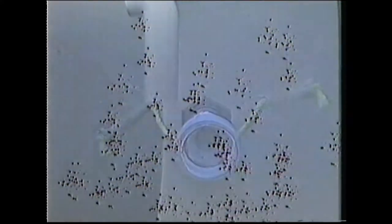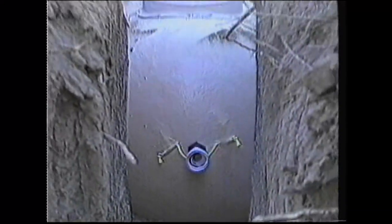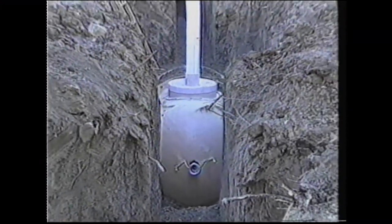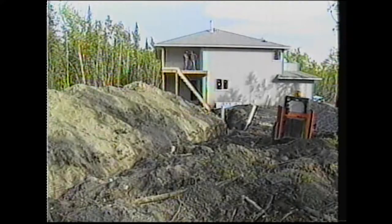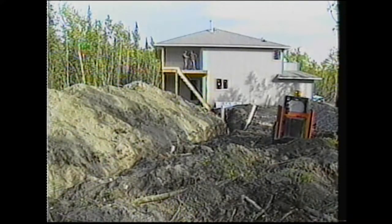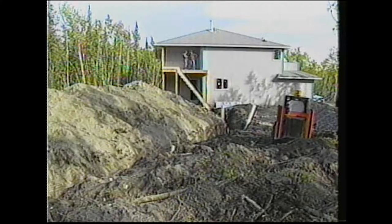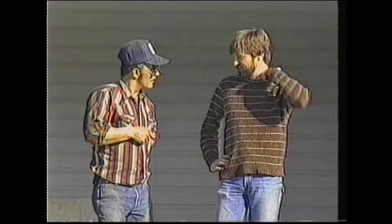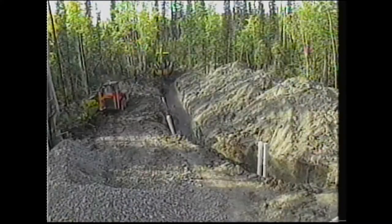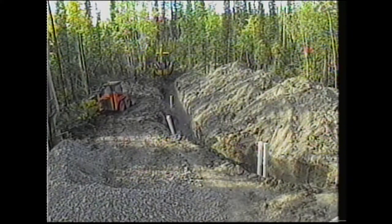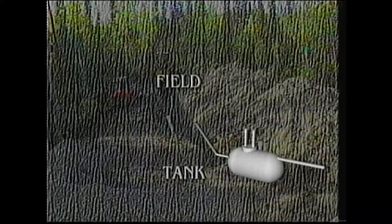Liquid effluent from the settling chamber flows from the siphon compartment and is discharged to the soil absorption system in large flushes. The siphon process helps prevent freezing and allows the even distribution of the effluent throughout the system. This also reduces the chance of failure due to clogging and overloading. There is a misconception by many that the field is the only part of a system where sewage is treated. In fact, it's a two-part treatment process involving both the tank and the field. Each must be working properly to effectively treat the sewage.